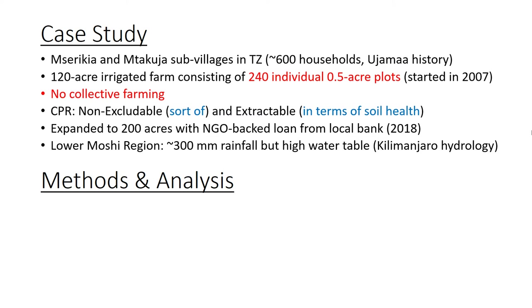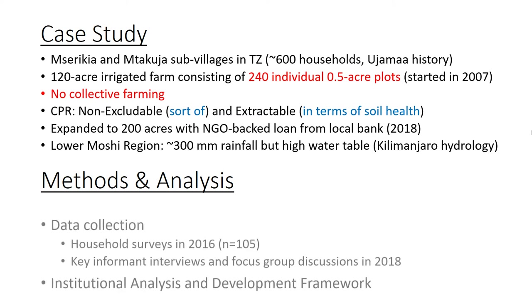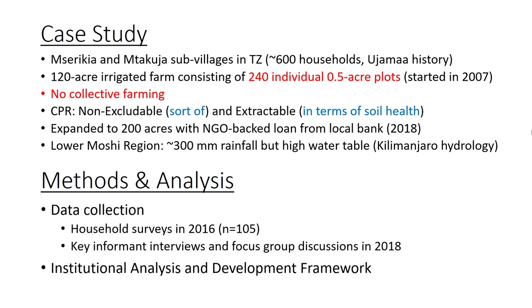The farm was expanded recently with the community taking a loan, and so far they've made every single payment. It's important to notice that it's part of the wider Kilimanjaro hydrology, which means it rains a lot up in the mountains but is quite dry in the lowlands. It still has a very high water table, which is also why the sugarcane farm is able to be there. We collected data in 2016 and 2018, and we use an IAD framework in our analysis.